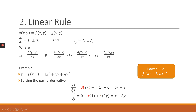Finding the partial derivative of z with respect to y: for the first element, 3x² is a constant because we are differentiating with respect to y, so the answer is 0. For the second element xy, x is the constant and differentiating y gives 1. For 4y², the constant is 4, and differentiating y² with respect to y gives 2y. Removing the brackets and solving, the partial derivative of z with respect to y is x + 8y.